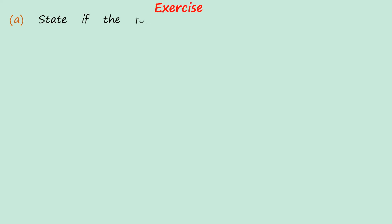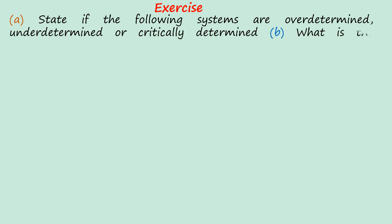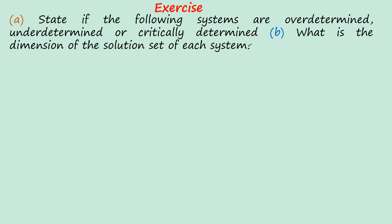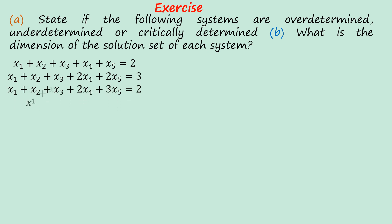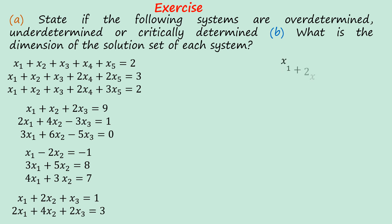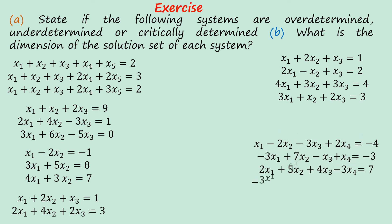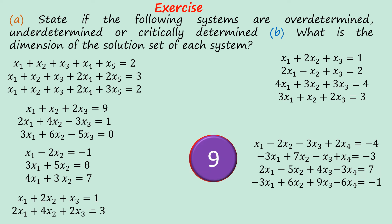Now try this exercise. A: State if the following systems are overdetermined, underdetermined, or critically determined. B: What is the dimension of the solution set of each system? The systems given are: 3 equations and 5 unknowns; 3 equations and 3 unknowns; 3 equations and 2 unknowns; 2 equations and 3 unknowns; and 4 equations and 3 unknowns. Pause the video, try it, and we will give you the solution.